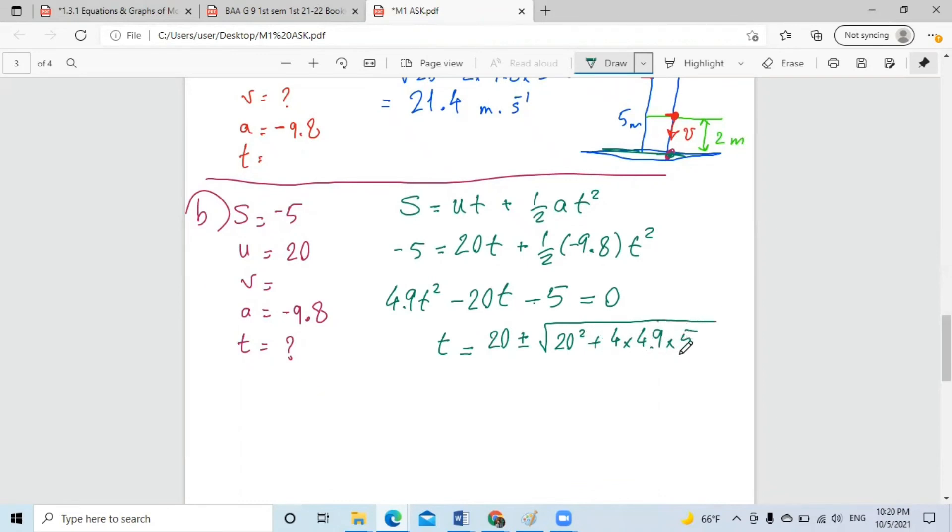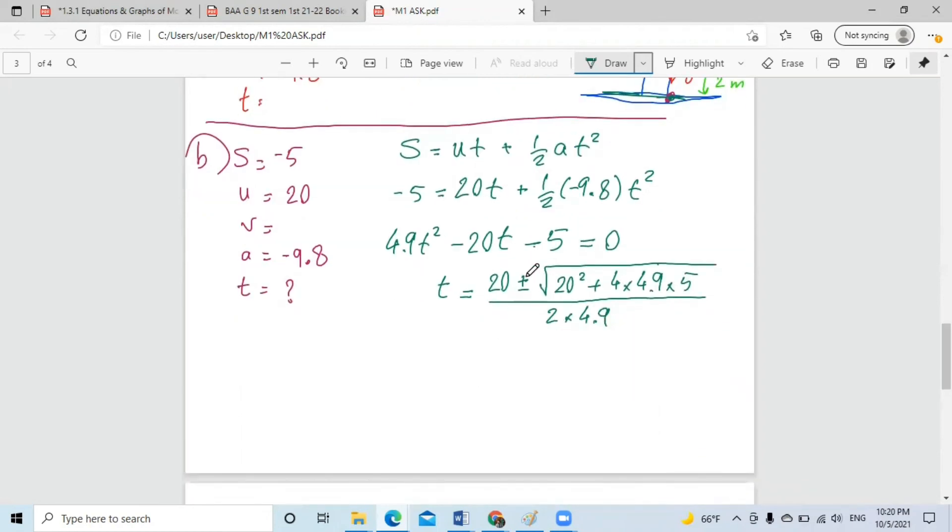All of this divided by 2 multiplied by A, and we will get two different answers. One answer is negative, which is negative 0.236 seconds. And we will cancel it. It's neglected. We don't want it. The time which is equal to 4.3 seconds. And that's our answer. And that's it for this question.